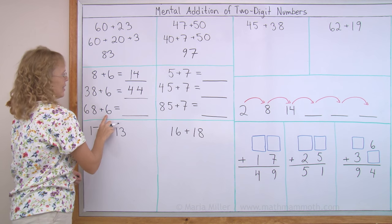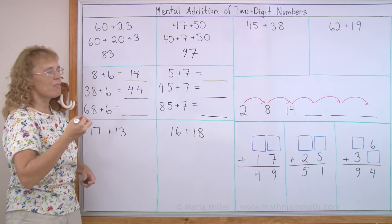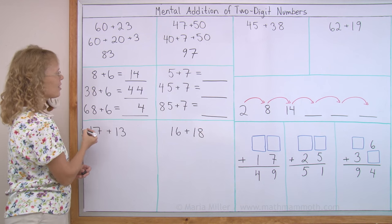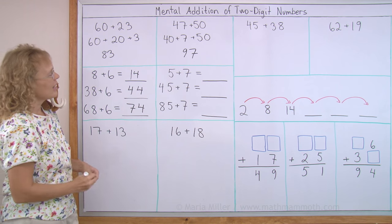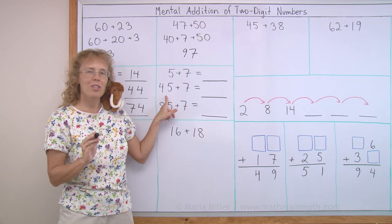68 plus 6, the same idea. It will be 4 more than the next 10. So it ends in 4, the next 10 is 70. Try this on your own. Pause the video.